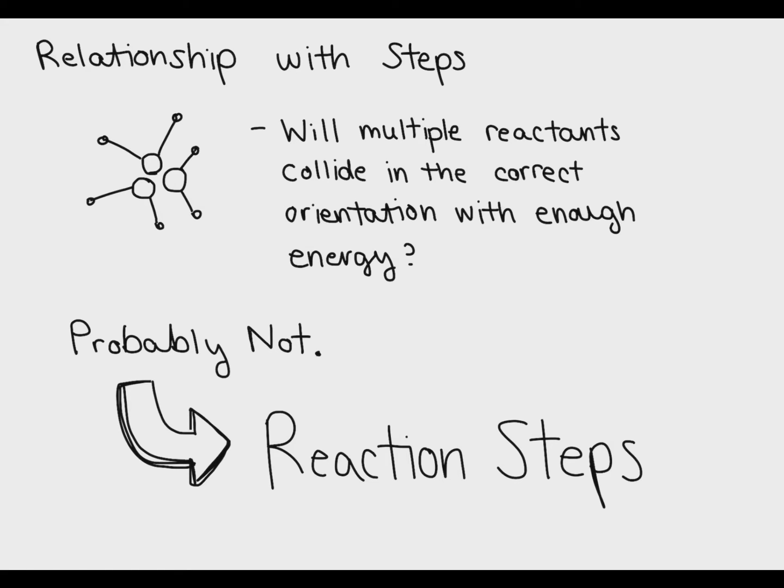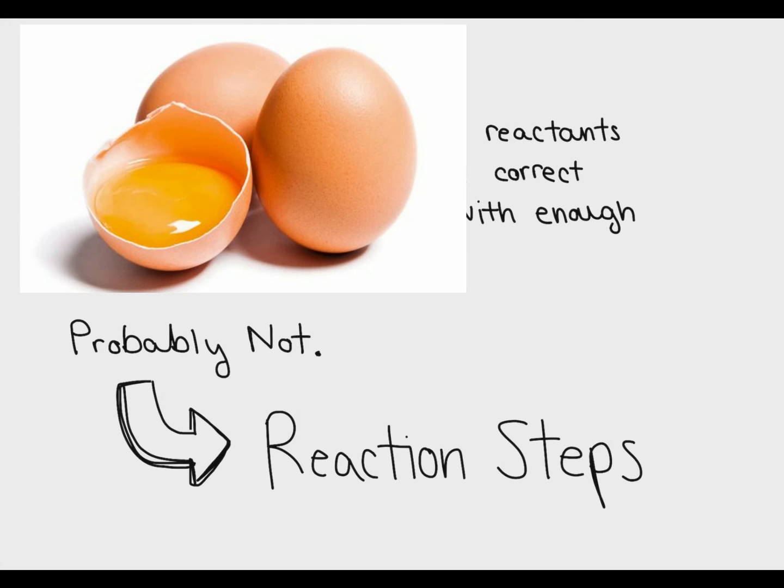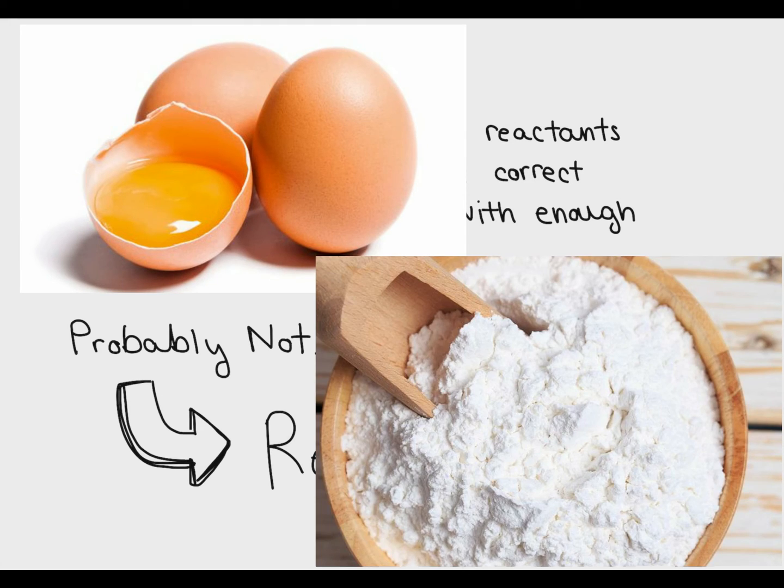Now that might sound a little bit confusing, but picture it this way. Sometimes baking recipes call for you to mix certain ingredients together while not mixing them with other ingredients. Commonly, I can think of you mix wet ingredients and keep them separate from dry ingredients. This is because wet ingredients mix together easier. This is kind of like a reaction step. You mix the easiest things together first, and then you mix the wet and the dry because they're more difficult to combine.